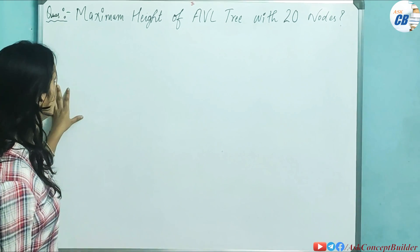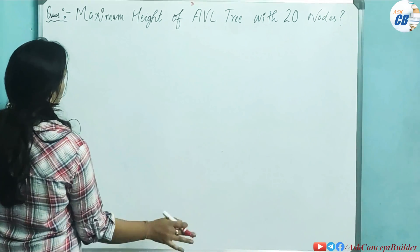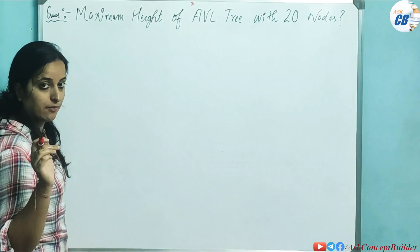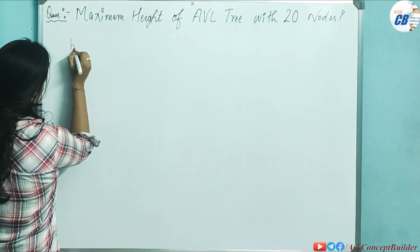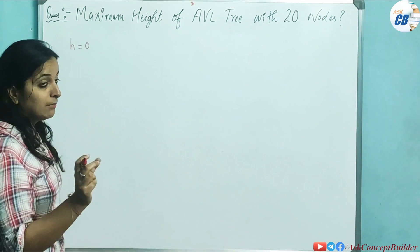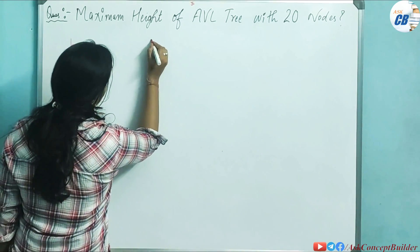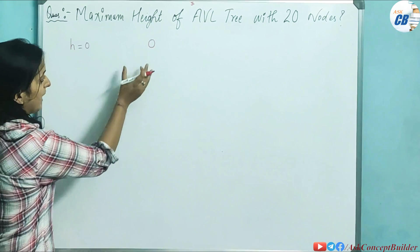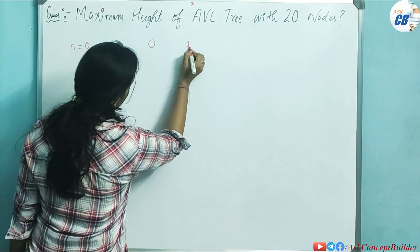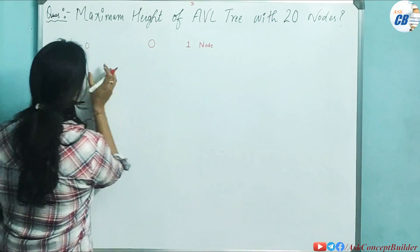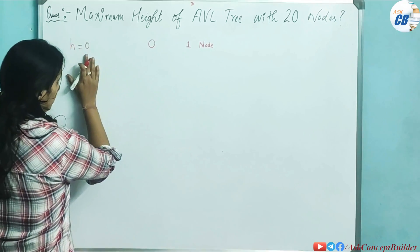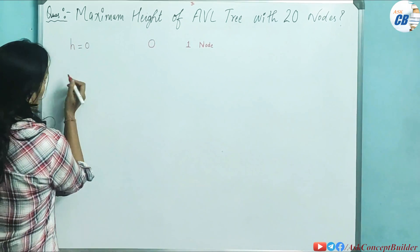We need to find the maximum height of an AVL tree when you have 20 nodes. Let us start iteratively. For height 0, how many minimum nodes are required? If I have just one node, the height is 0. So for height 0, the minimum number of nodes required is 1.